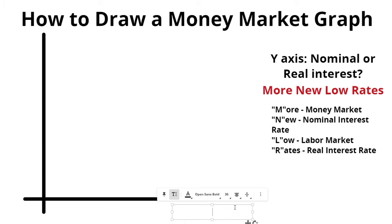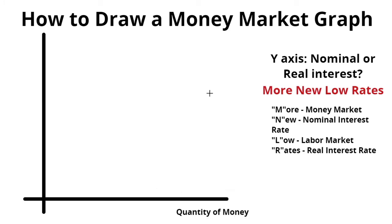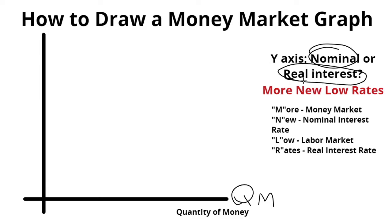We obviously have quantity of money on the x-axis — you can label that as QM. But the y-axis is the trickiest part, because many people are confused whether it's nominal or real interest rates. They draw in the wrong one and they get a 4. But that's not going to be you after you watch this video.